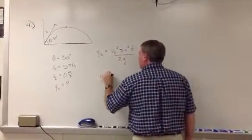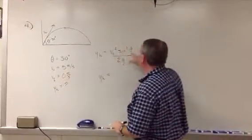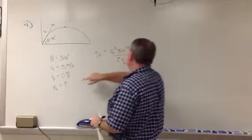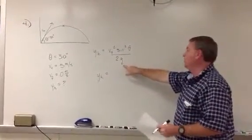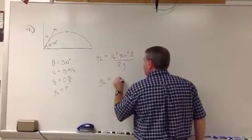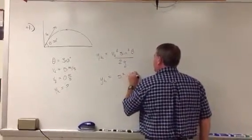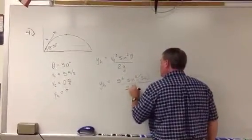yh is equal to v0 squared sine squared theta all over 2g. So y sub h is equal to... We have v0, that's 5. We have theta, that's 30. And if it doesn't say that you're not on Earth, you can assume that gravity is 9.81. So we'll plug that in. We have everything that we need. That's going to be 5 squared sine squared 30 degrees divided by 2 times 9.81.